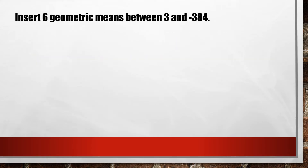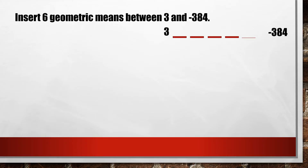Insert 6 geometric means between 3 and negative 384. First, we need to visualize our sequence. So 3 is our first term and negative 384 is our last term, and we are to insert 6 geometric means between these two. In order to do that, we need to first find the common ratio using the formula: R raised to n minus 1 equals a sub n divided by a sub 1. This formula is derived from the geometric sequence formula, so nothing is new here.